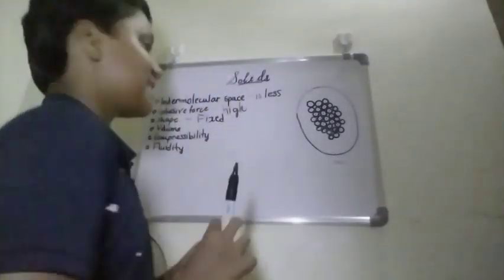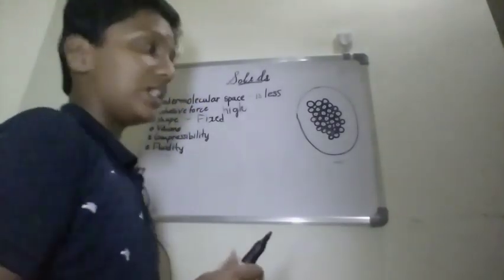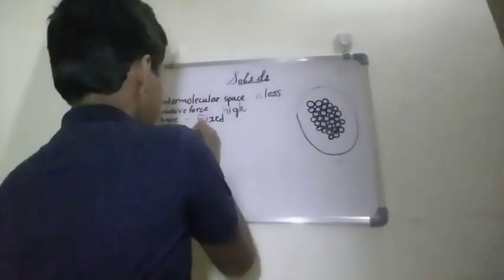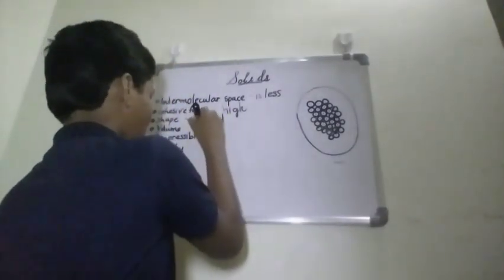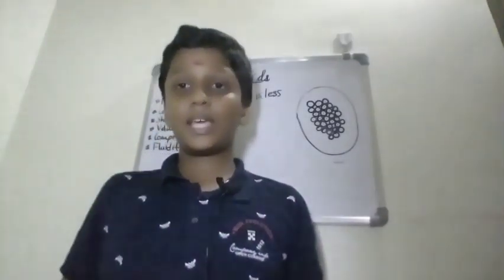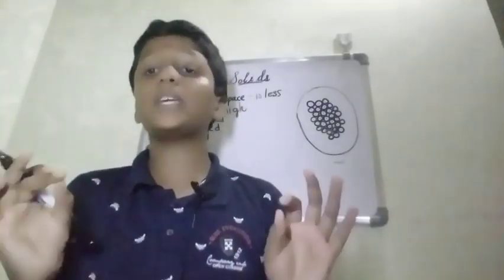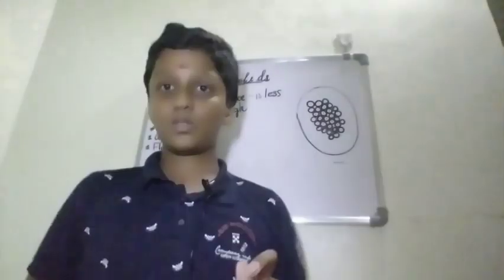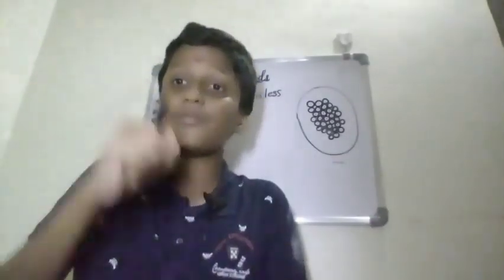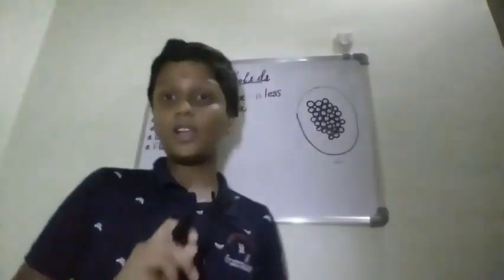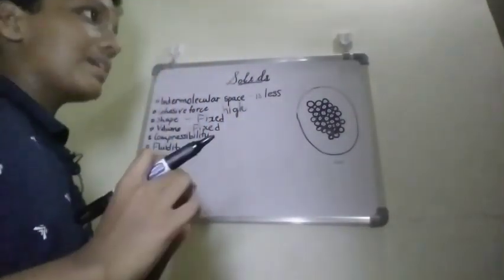Solids can only change shape when force is applied or when they are cut or broken. So solids have a fixed shape. And next, volume — solids have a fixed volume. Their volume does not change because of the less intermolecular space. We cannot compress them further to make the intermolecular space less or change the volume.